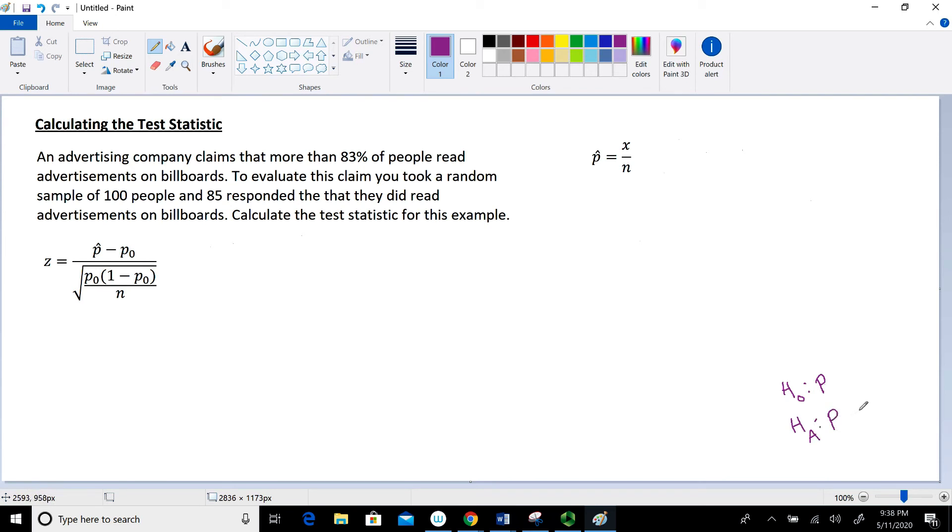Now, the hypothesized value about the population proportion is P sub 0, and that's given in the problem statement - that's the claim about the parameter. So the advertising company claims that more than 83% of individuals read advertisements on billboards. So that's really saying P sub 0 is 0.83. And our hypothesis statement is always a statement about a parameter, so that's going to deal with the 0.83 for each of those statements.